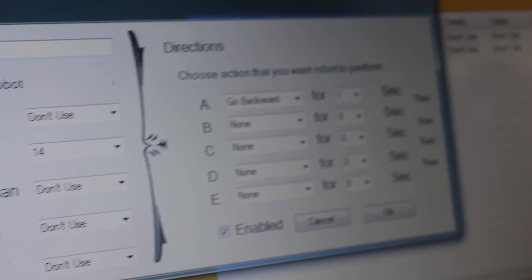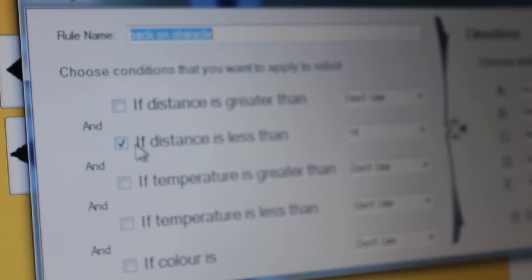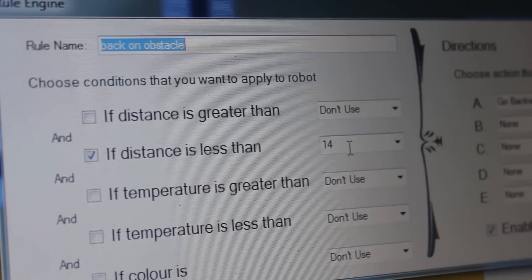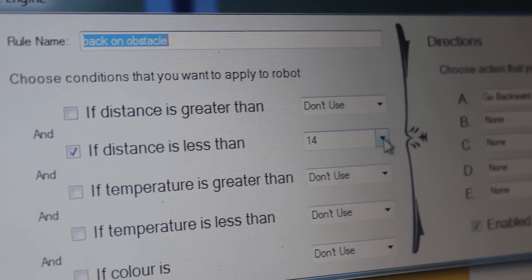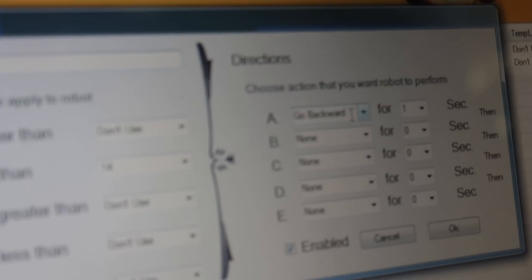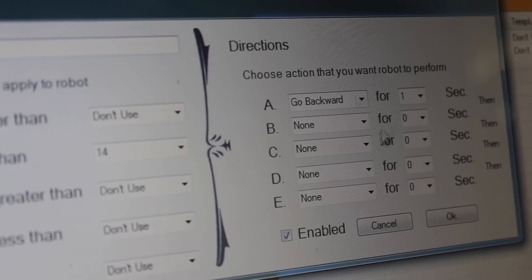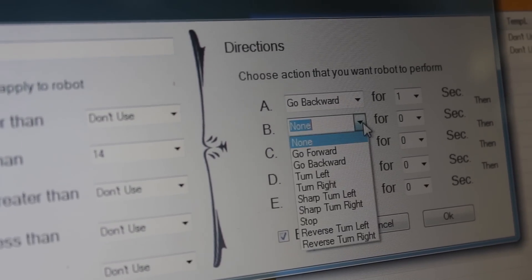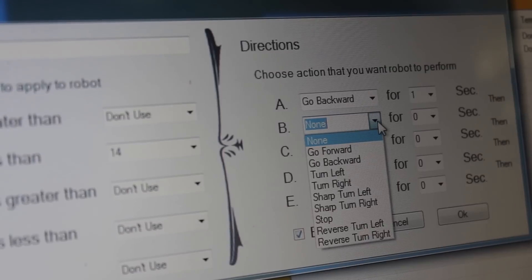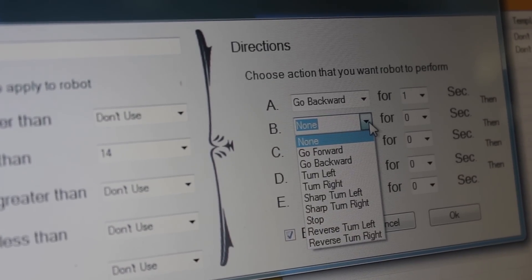For example, back on obstacle, it just says if the distance is less than 14 and that would be in centimeters, then you can do a number of things. In this case, we've just told it to go backwards for one second. But we could also tell it go forward, turn left, make a sharp left, stop.